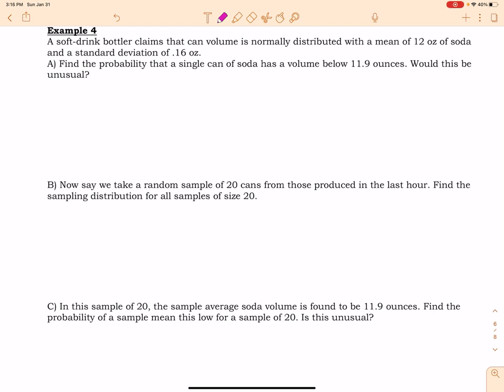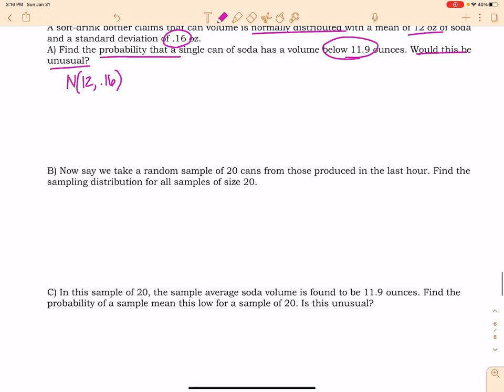This video is going to be an example of sampling distributions for quantitative data. So we have a soft drink bottler that claims that can volume is normally distributed with a mean of 12 ounces of soda and a standard deviation of 0.16. So we have a normal situation here. And we're being asked to find the probability that a single can of soda has a volume below 11.9 ounces. So we want to know how unusual this would be.